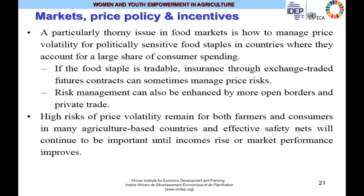Price incessant fluctuation for politically sensitive food staples — like rice, sugar, milk, and bread — is a concern in countries where these account for a large share of consumer spending. If the food staple is tradable, insurance through exchange-traded futures contracts can sometimes manage price risks. Risk management from the market channel can also be enhanced by more open borders and private trade. High risks of price volatility remain for both farmers and consumers in many agricultural-based countries, and effective safety nets will continue to be important until incomes rise or market performance improves.